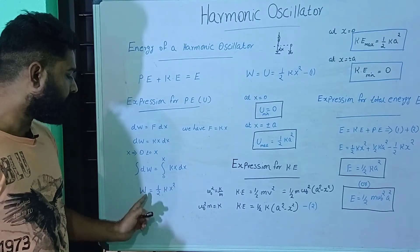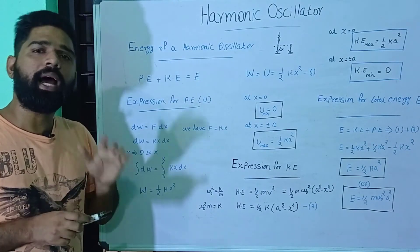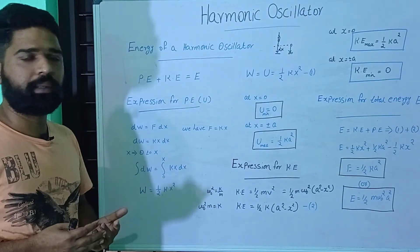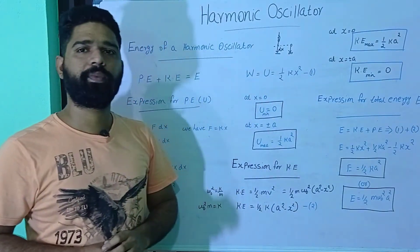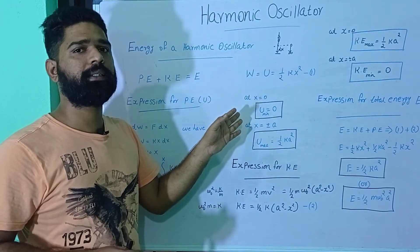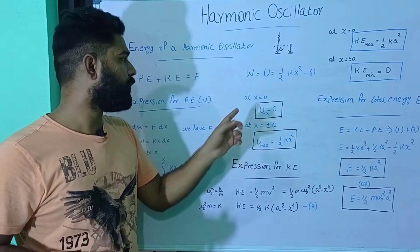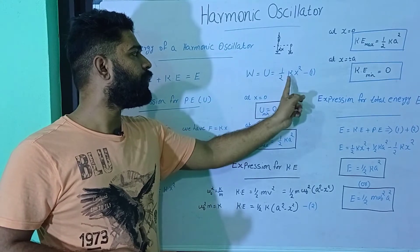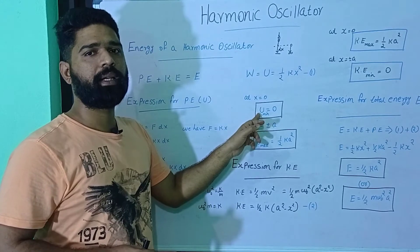The total work done equals the change in potential energy. So the potential energy U is equal to 1/2 kx². Now if we apply the condition x equal to 0, then U equals 1/2 k into 0 squared, which means U is equal to 0. That means the potential energy is minimum and equal to 0.